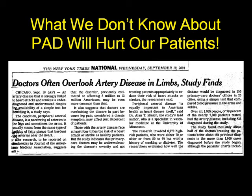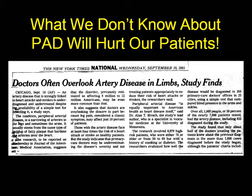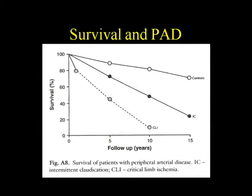Doctors often overlook arterial disease in limbs — this was even reported in the New York Times, and this is in an advanced country. Survival is important: a patient with peripheral vascular disease and intermittent claudication has significant mortality. You can see how the mortality of these patients tracks over time on this chart.